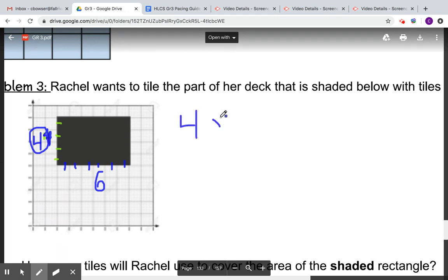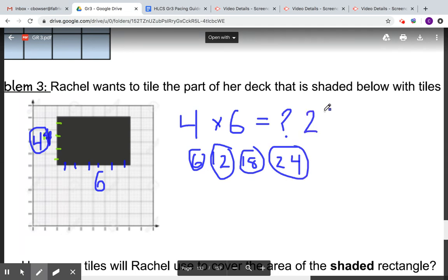So four times six equals what? Take a minute to solve. You can write out your skip counts if you'd like: 6, 12, 18, 24. So this is four groups of six and I know my final answer is 24. But again, I know I'm not completely done yet.